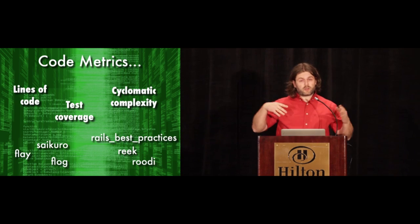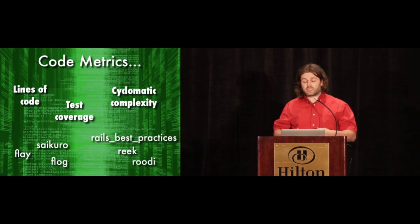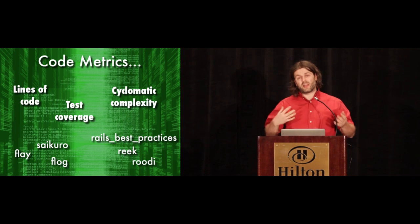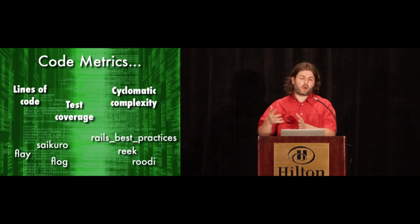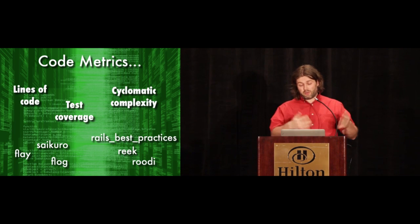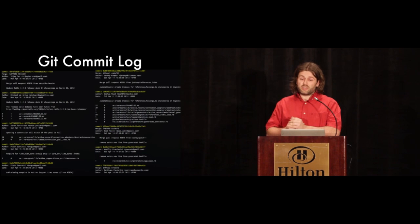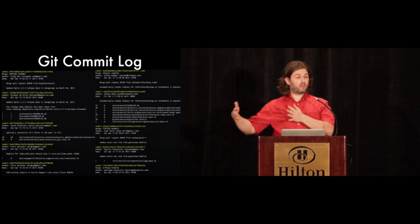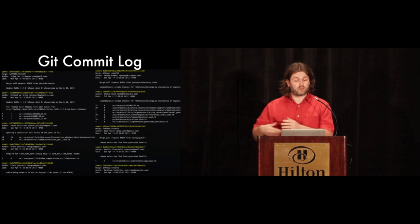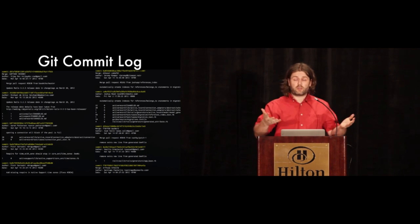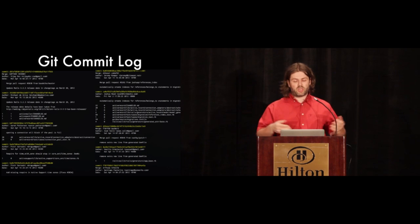We use a lot of code metrics like lines of code, test coverage, cyclomatic complexity to analyze our code, but typically it's just analyzing some snapshot of our code. We have a lot of Ruby tools that do that, but it would be interesting also to have a look at Git log, which contains a lot of information how our code has changed over time, to get some valuable information, sometimes just fun information out of that.